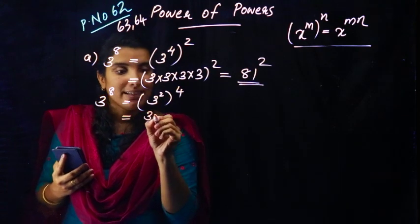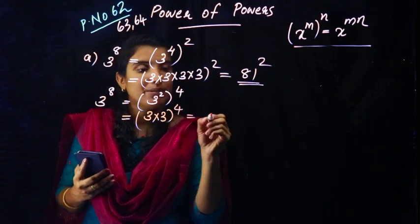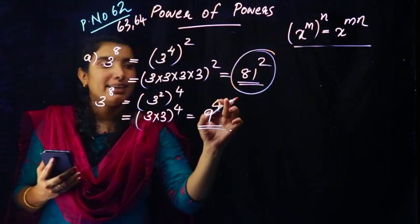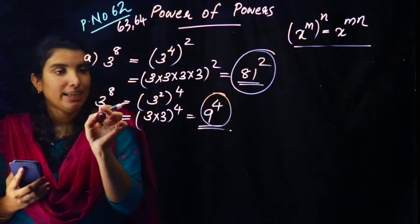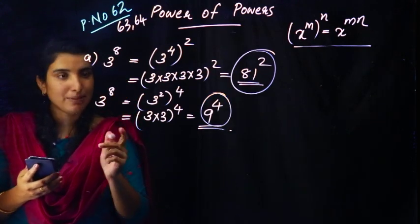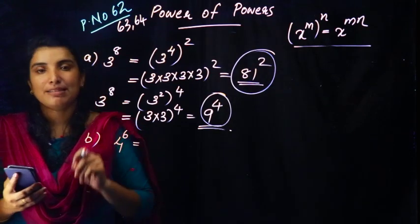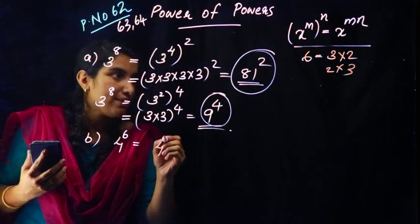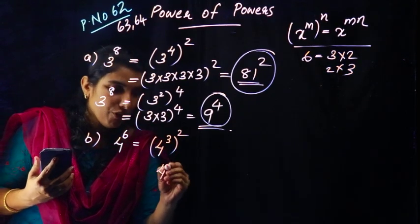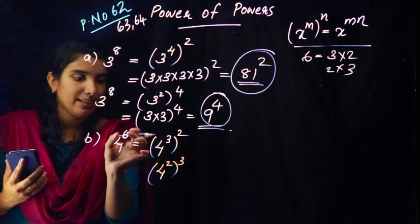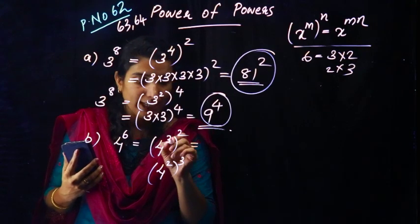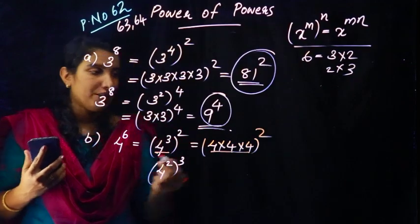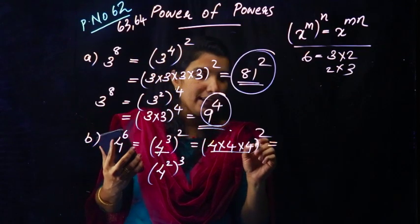If you have 3 squared, that is 3 into 3, that is all raised to 4, equal to 9 raised to 4. If you have 3 raised to 8, you can have 81 squared and 9 raised to 4. The answer is 2 raised to 4 raised to 6, so 4 raised to 6 is the same answer. The answer is 3 into 2 and 2 into 3. Let's do 4 raised to 3, the all square. Let's do 4 raised to 2, the all cube — that gives 4 raised to 6.